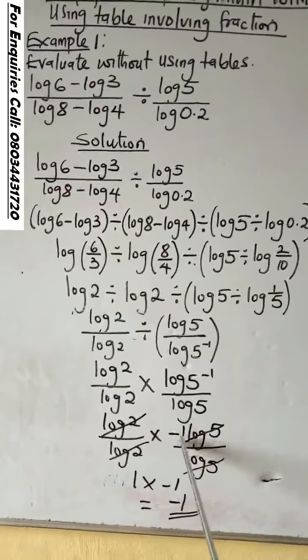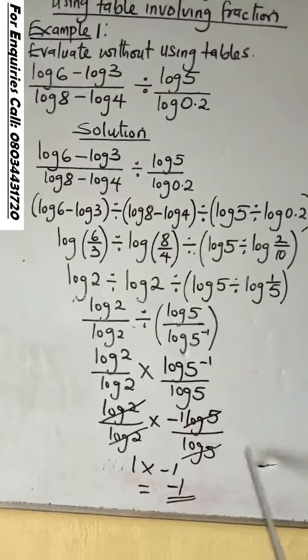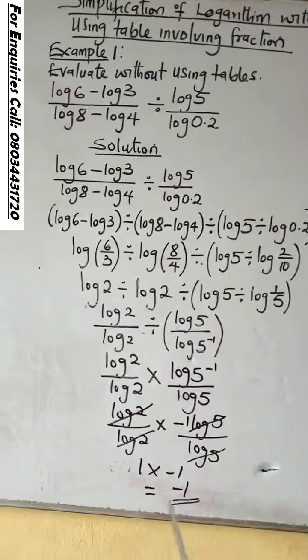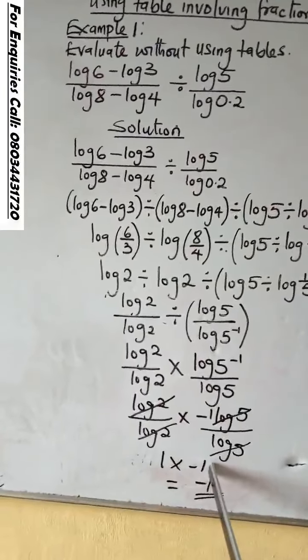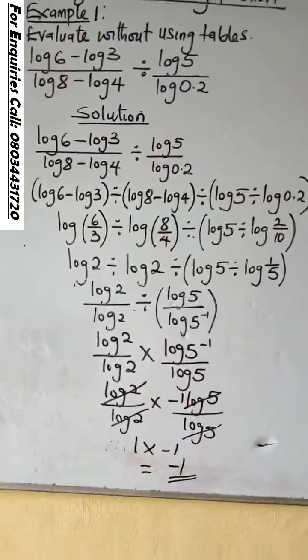It will be minus 1 log 5 over log 5. Log 5 will cancel log 5 to leave us with minus 1. 1 times minus 1 is minus 1.